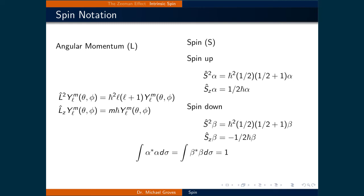For the intrinsic spin, we can construct the same operators: total spin-squared, denoted as S-squared, and the Z-component of spin, denoted as S-Z.